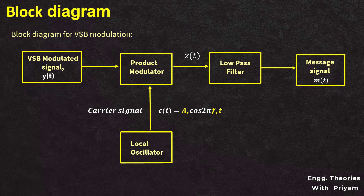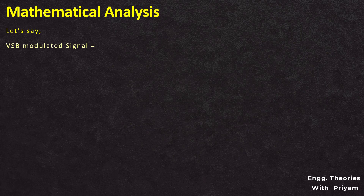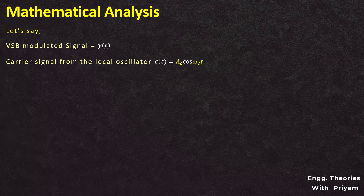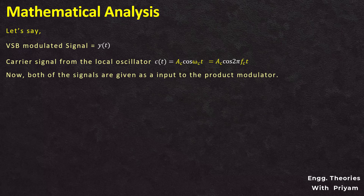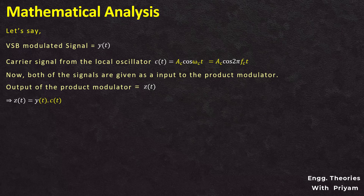We have extracted the message signal M(T) from the VSB modulated signal Y(T), performing demodulation of the VSB modulated signal. Now let's see the mathematical analysis for VSB demodulation. Let the VSB modulated signal be Y(T) and the carrier signal from the local oscillator C(T) be equal to AC·cos(ωC·T), which can be written as AC·cos(2πFC·T). Both signals Y(T) and C(T) are given as inputs to the product modulator, and the output Z(T) can be written as Z(T) = Y(T) × AC·cos(2πFC·T).